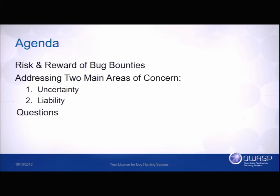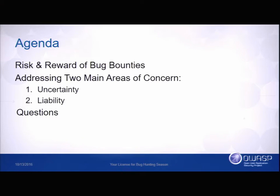Just yesterday at one of the associated happy hours, I ran into a guy very interested in running a bug bounty program at his company, but he said there are two things really holding him up. One is how to set the budget — which Casey can speak to — and the other was the lawyers keep telling him he's going to have some guy from somewhere in Eastern Europe hacking his system, and this is just an unacceptable risk. So they say no. How do you counter that so people can understand this risk isn't something that needs to stop them from running this type of program?